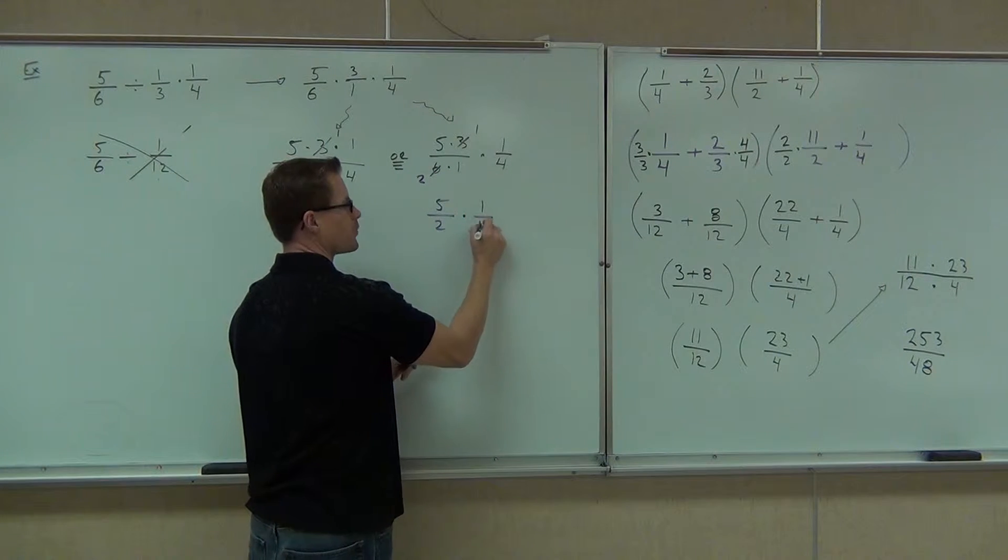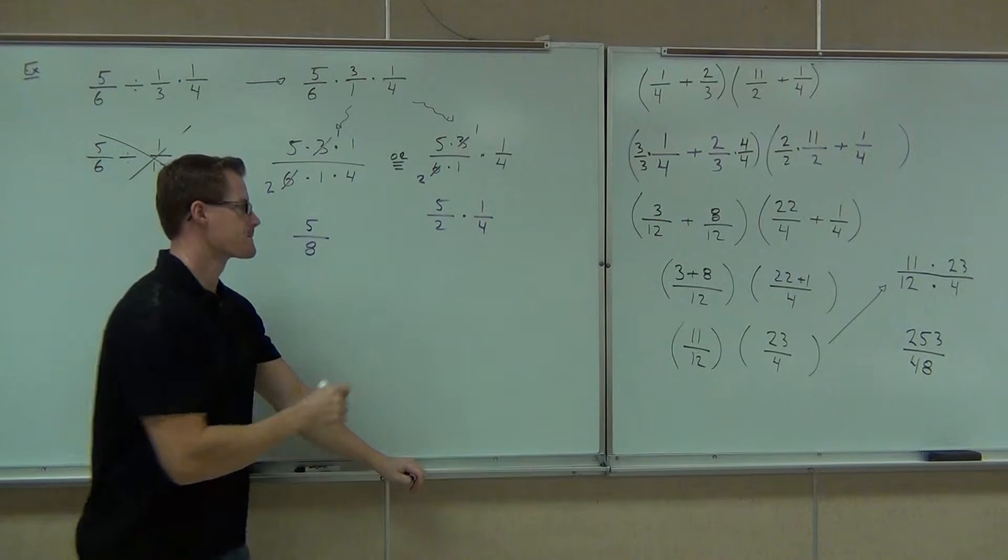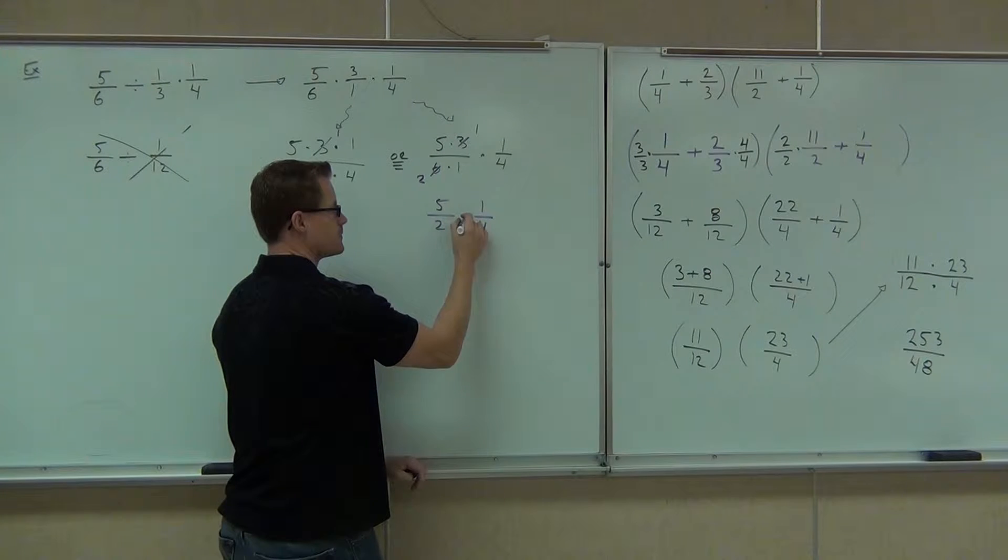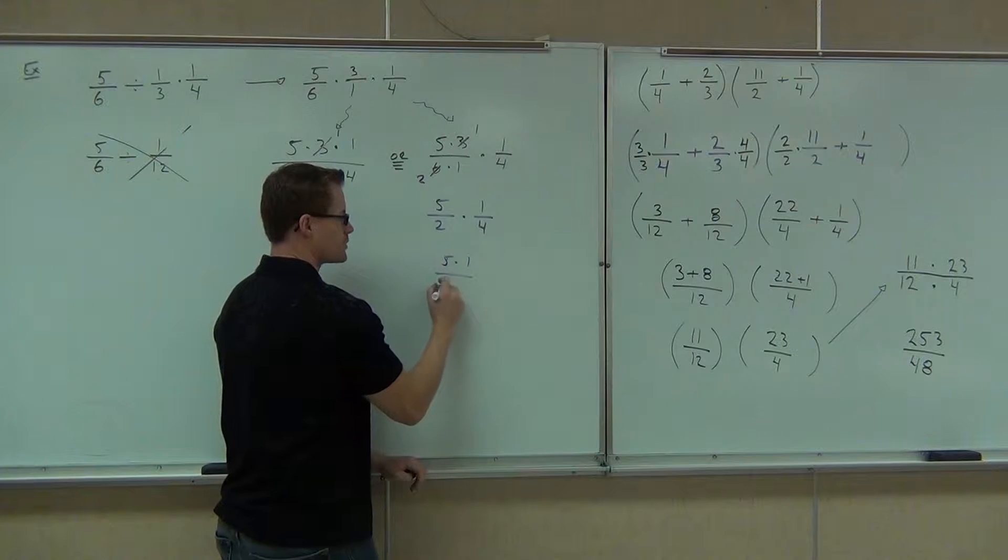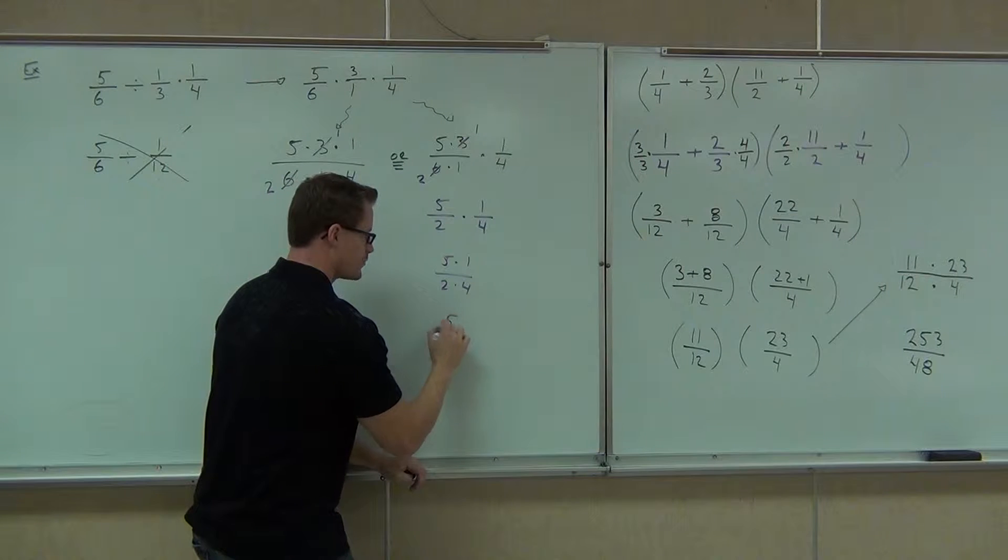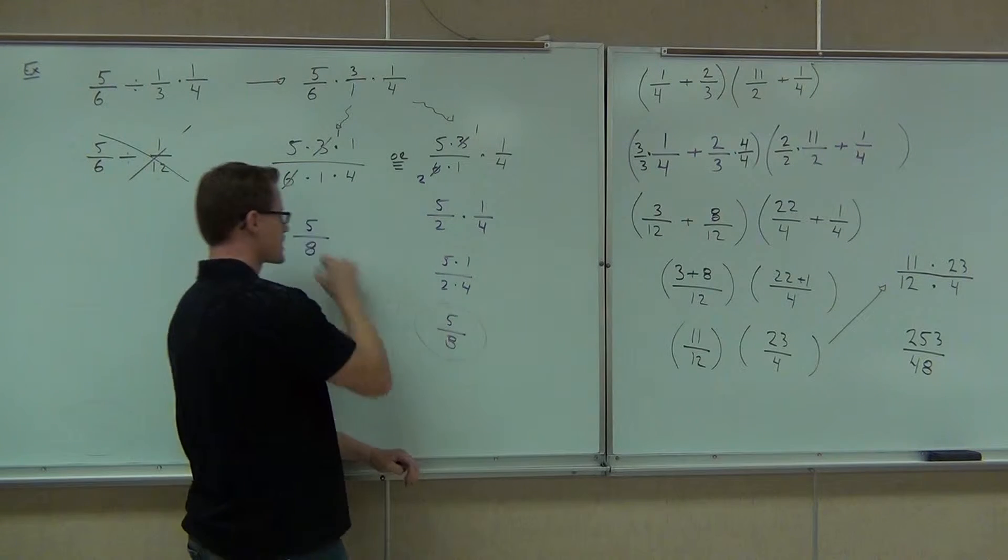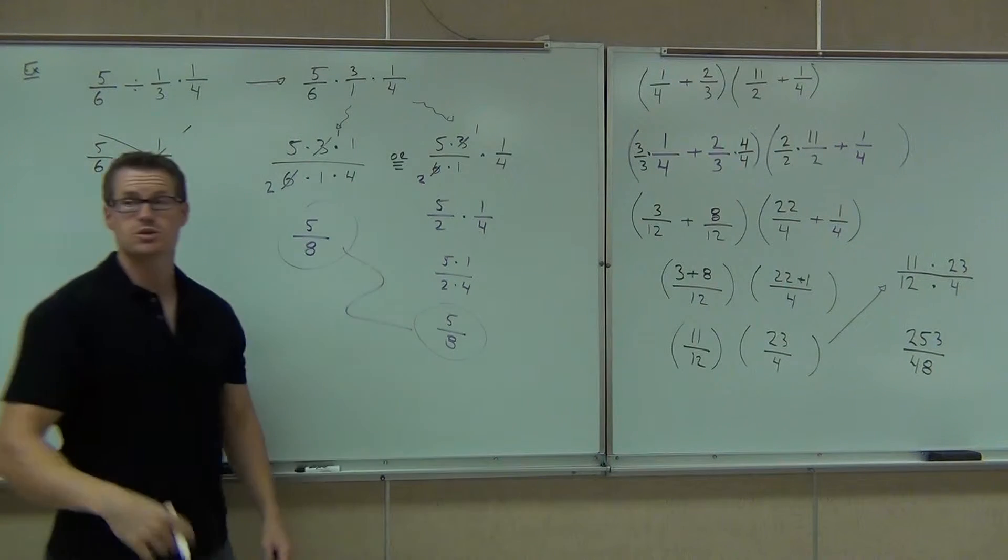However, you still have 1 fourth. Do you see it? Extend our line. 5 times 1 over 2 times 4. Nothing simplifies. You still get 5 eighths. Same exact answer, done two different ways.